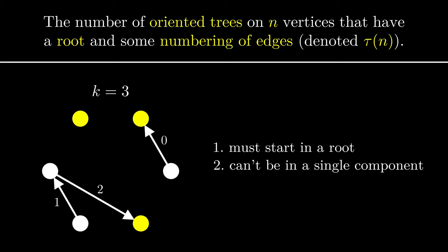The edge can end in any vertex, of which there are n. Given this end, we know it has to start from the root of some component, observation 1, and it cannot start in the component where it ends, observation 2.